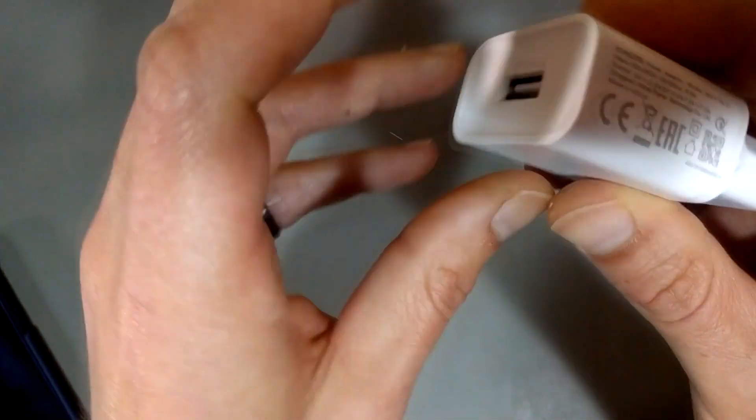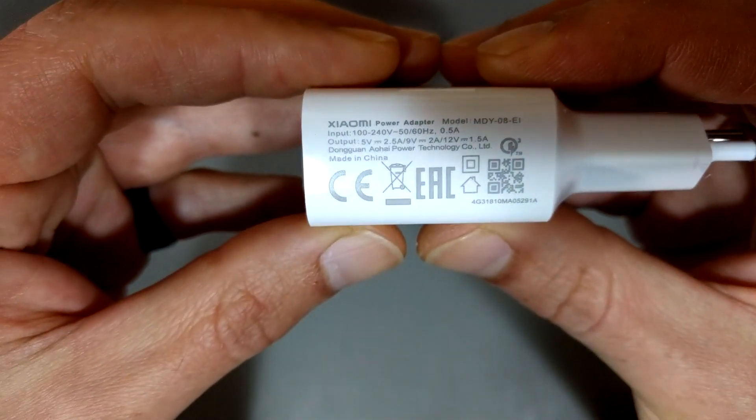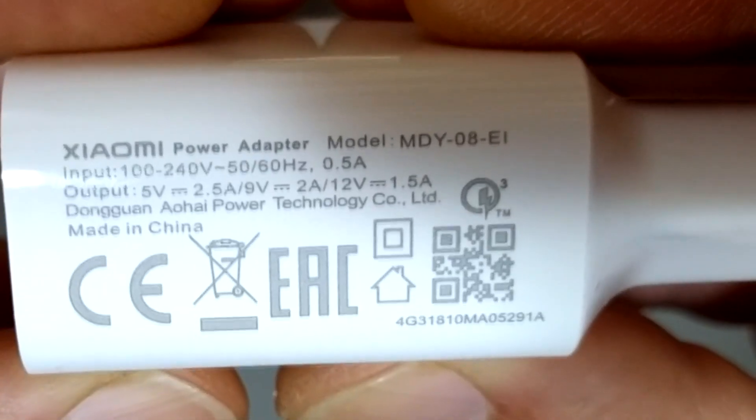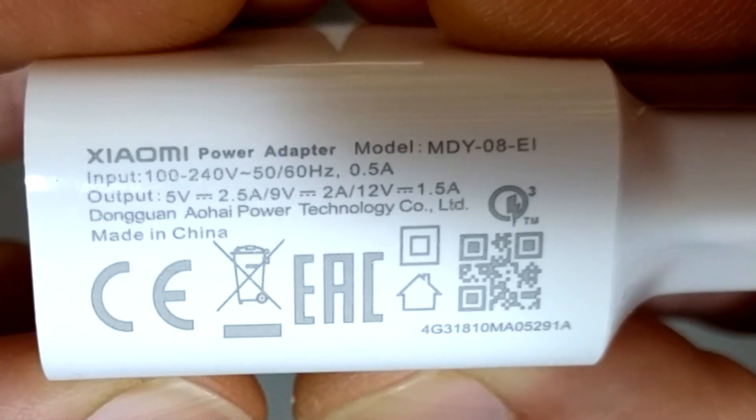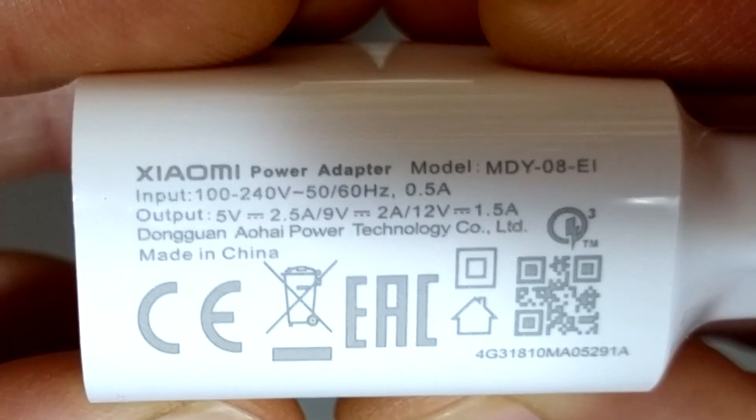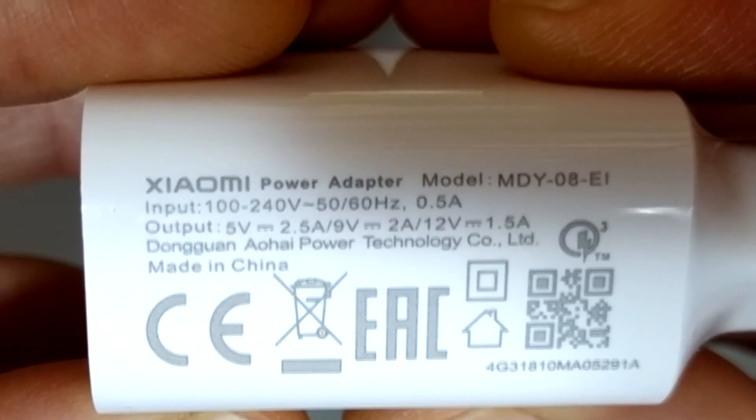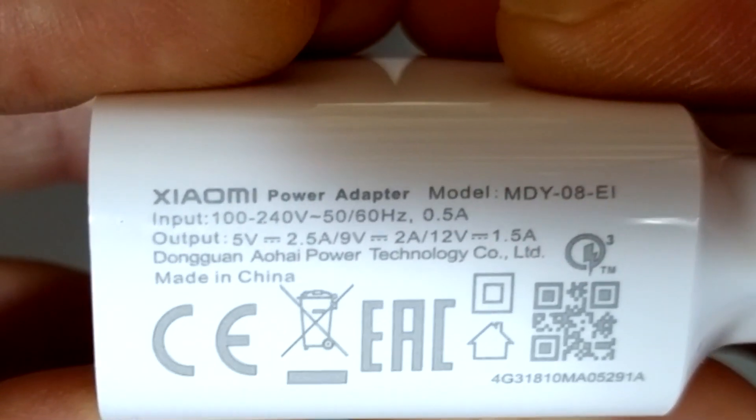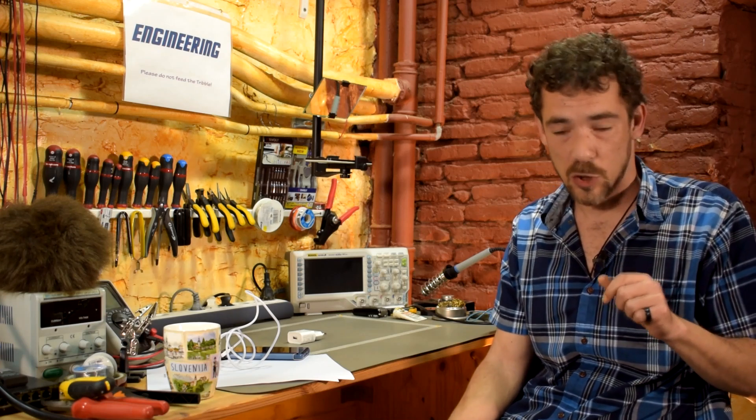But if we look really closely here at the text, we can see that it says input 100 to 240 volts. Output 5 volts, 2.5 amps, 9 volts 2 amps, 12 volts, 1.5 amps. Now here we have our first clue.